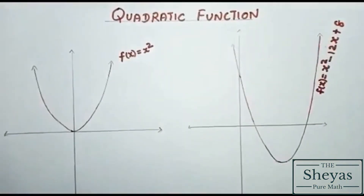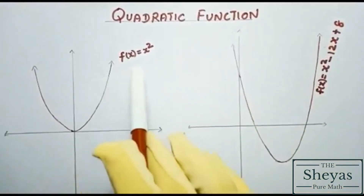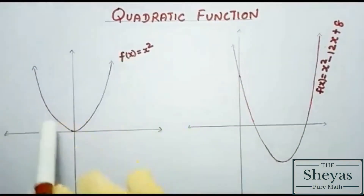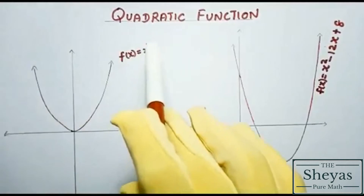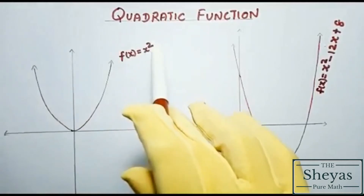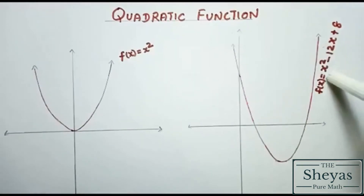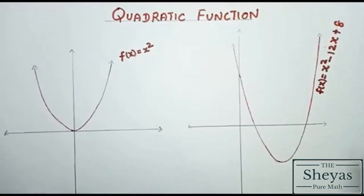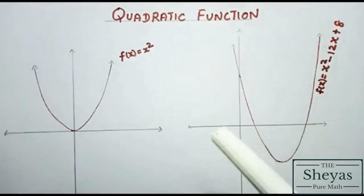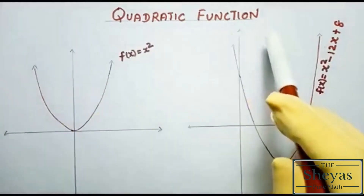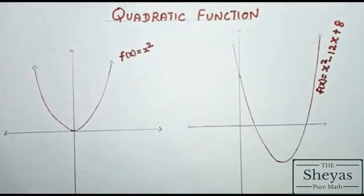These are examples of graphs of quadratic functions. Here, f of x is equal to x square, where the highest power of x is 2. And this graph is f of x is equal to x square minus 12x plus 8 — here also the highest power of x is 2. If the highest power of x is 2, then we call it a quadratic function.